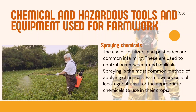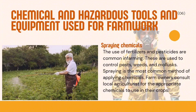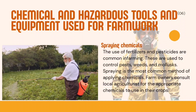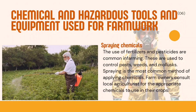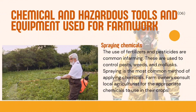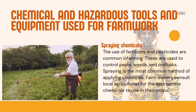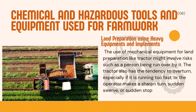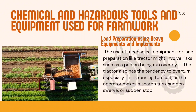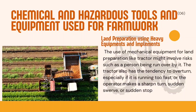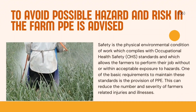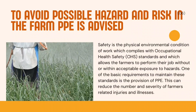Now let us talk about chemicals and hazardous tools and equipment used for farm work. 1. Spraying chemicals. The use of fertilizers and pesticides are common in farming. These are used to control pests, weeds, and mollusks. Spraying is the most common method of applying chemicals. Farm owners consult local agriculturists for the appropriate chemicals to use in their crops. 2. Land preparation using heavy equipment and implements. The use of mechanical equipment for land preparation like a tractor might involve risks such as a person being run over by it. The tractor also has the tendency to overturn, especially if it is running too fast. To avoid possible hazards and risks in the farm, personal protective equipment is advised.